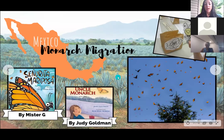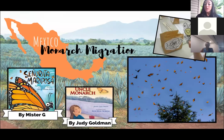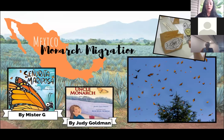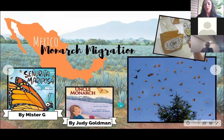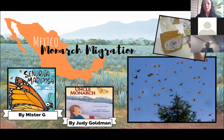Uncle Monarch and the Day of the Dead is a great children's book to help students have a different perspective on how other cultures celebrate the death of their loved ones, and how it coincides with the butterfly migration. At the end of the book, there are Spanish terms and definitions used in the story, plus a really awesome explanation of what Día de los Muertos is. So you can definitely talk to your students about that.